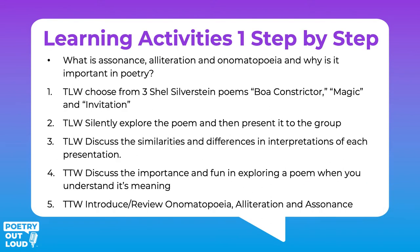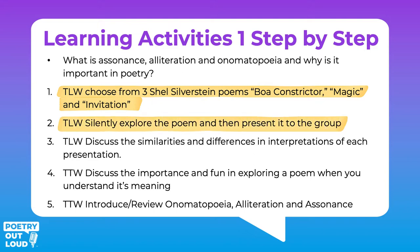The learning activities step-by-step are very similar to the essential questions. Students are going to choose from those three poems — Boa Constrictor, Magic, and Invitation — and we're just going to have fun with this first exploration. They get to silently explore those three poems and see which one resonates with them best. I find that even with high school students, it's really terrific to give them some choice and freedom. Then they're going to choose that poem, and before we've even gone into assonance, alliteration, and onomatopoeia, we're going to have them share that poem with the group one by one. This is just their point A.